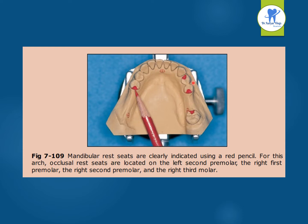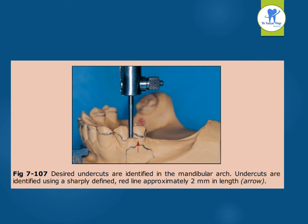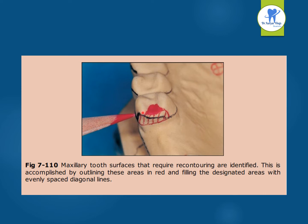Here, the mandibular red rests are clearly indicated using a red pencil. These occlusal rest seats are located on the left second premolar, the right first premolar, right second premolar and right fourth molar. These are the tripod marks which are marked using a red pencil. In some situations, it is necessary for the practitioner to reshape the teeth to permit adequate space for the rest. For ease of identification, these areas should be outlined in red and filled with evenly spaced diagonal lines. The desired undercuts are identified in the mandibular arch and can be marked using a sharply defined red line, approximately 2 mm in length. The maxillary tooth surfaces which require re-contouring are also identified by outlining these areas in red and filling the designated areas with evenly spaced diagonal lines.